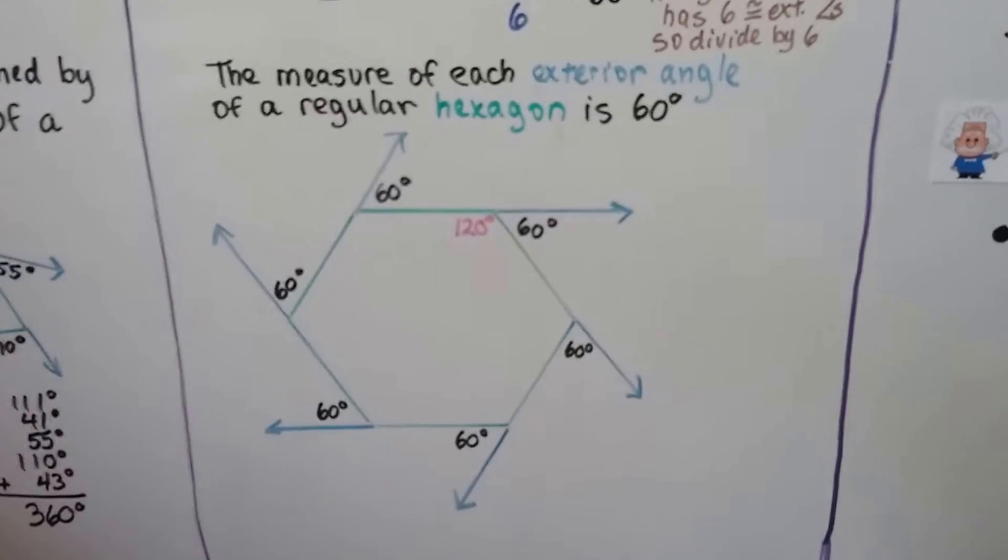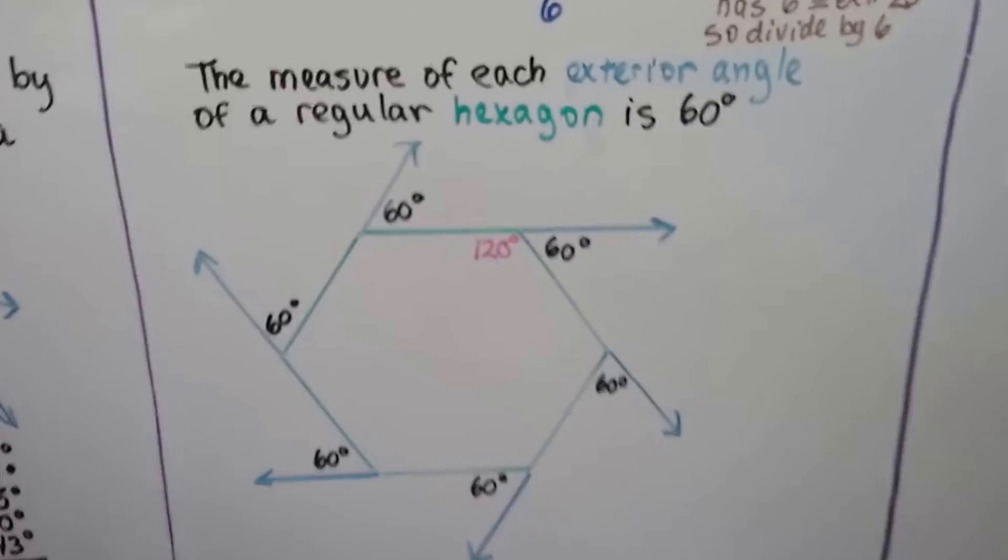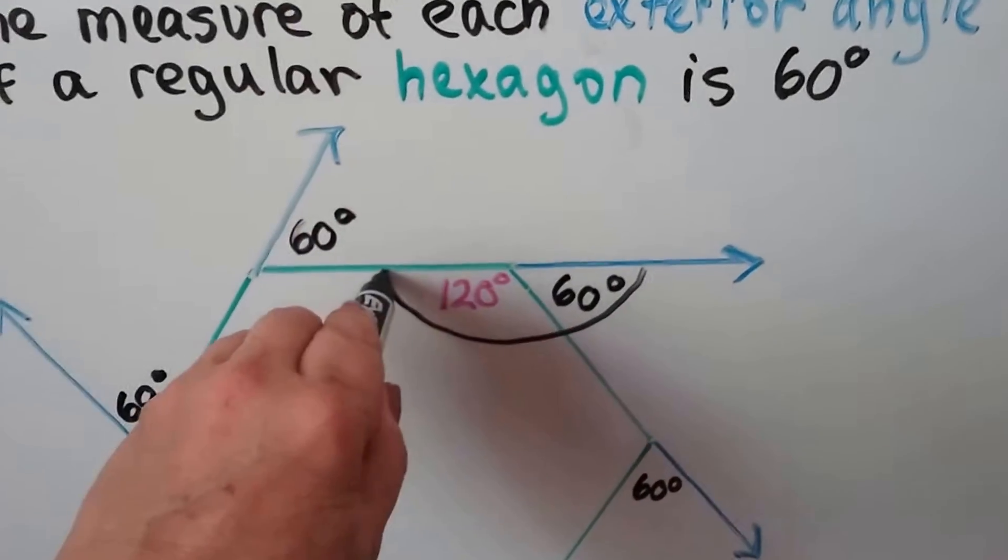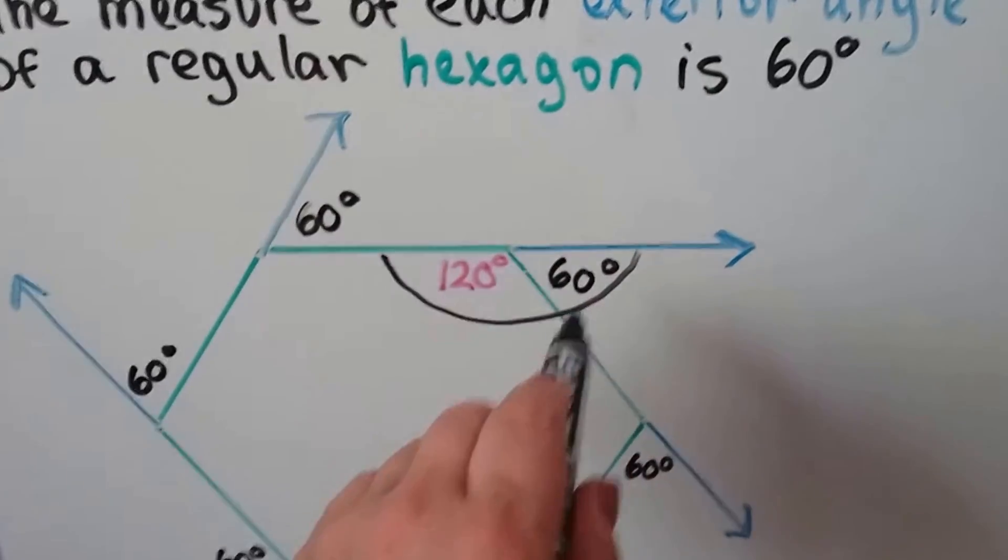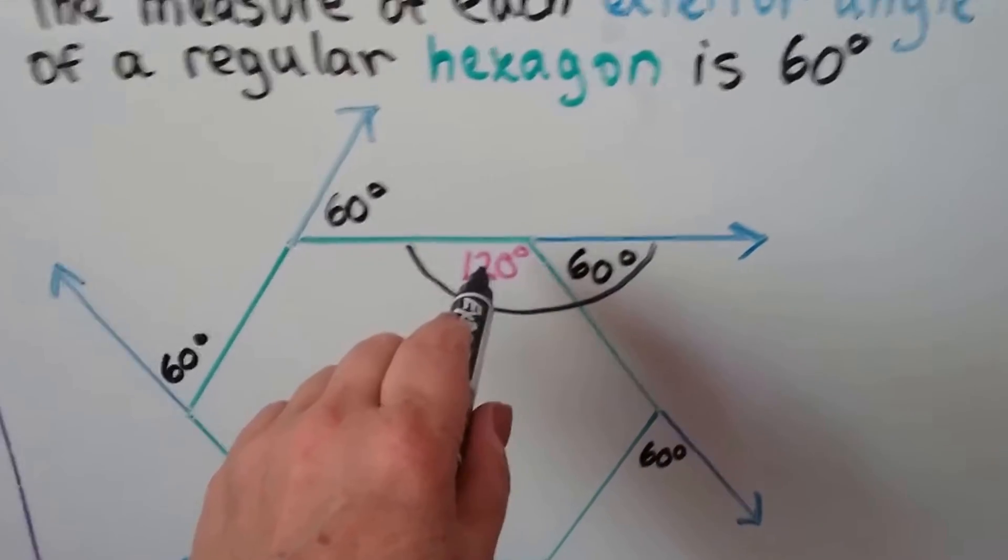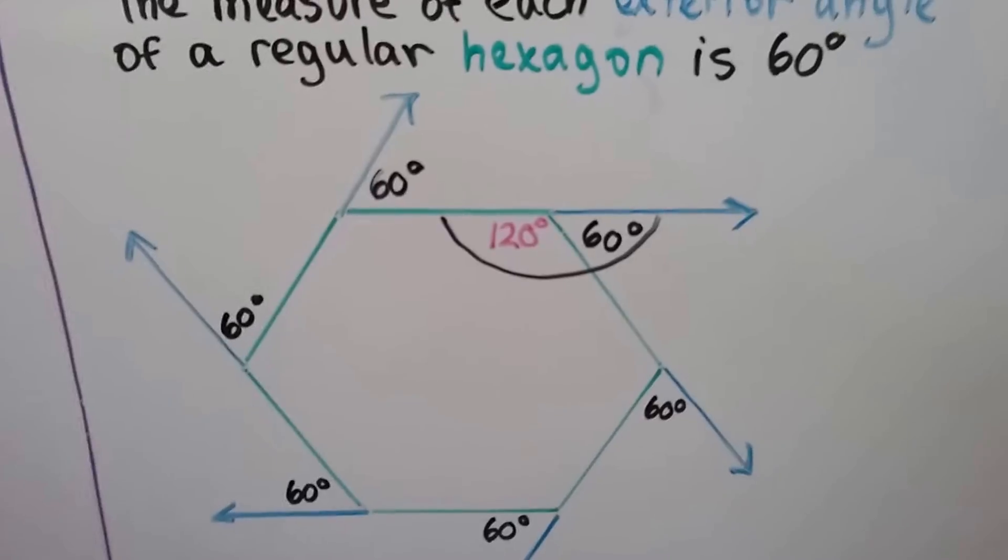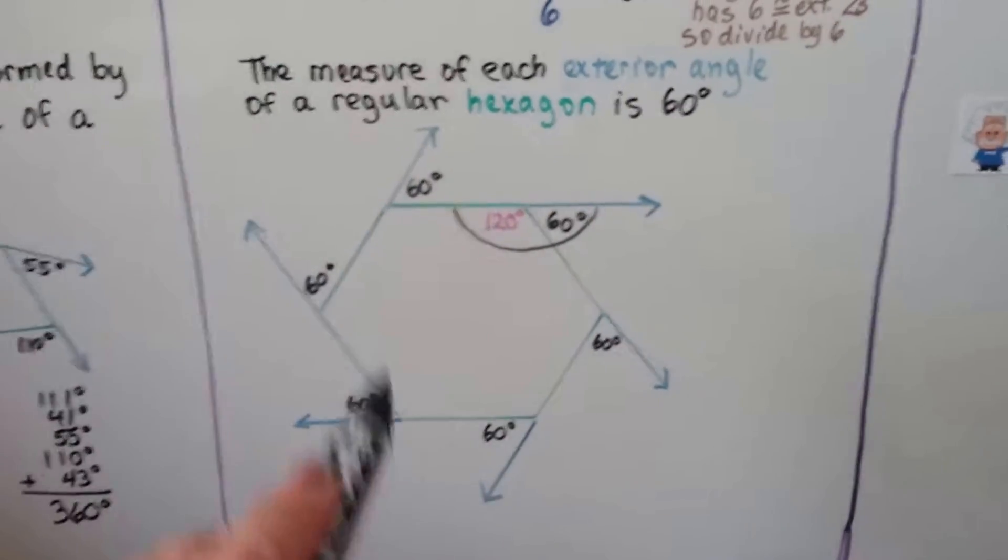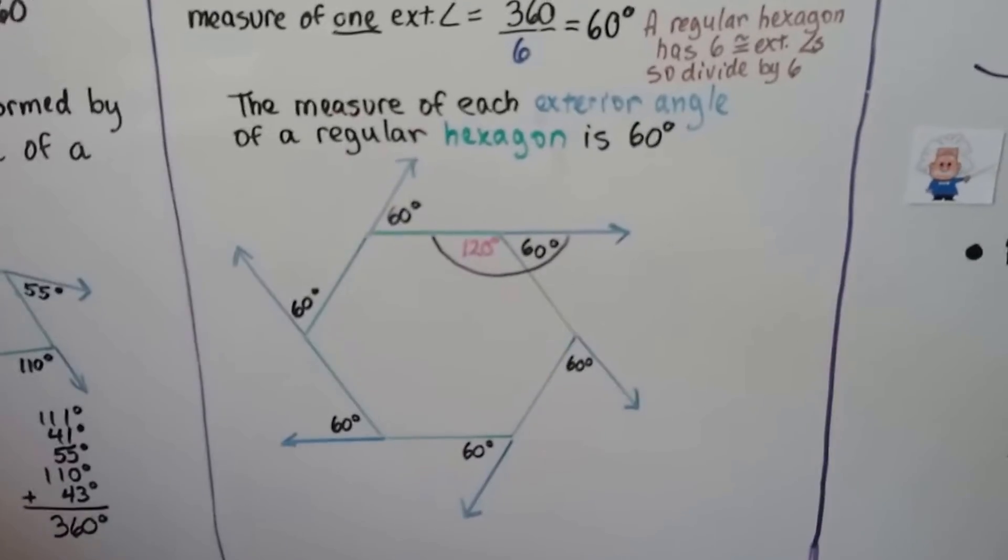Look at that. And supplementary angles, we know that this angle measure right here, because that's a straight line, if that's 60 degrees, that interior one would be 120, wouldn't it? Because it should be 180 degrees. So we would be able to find the interior angle measures too.